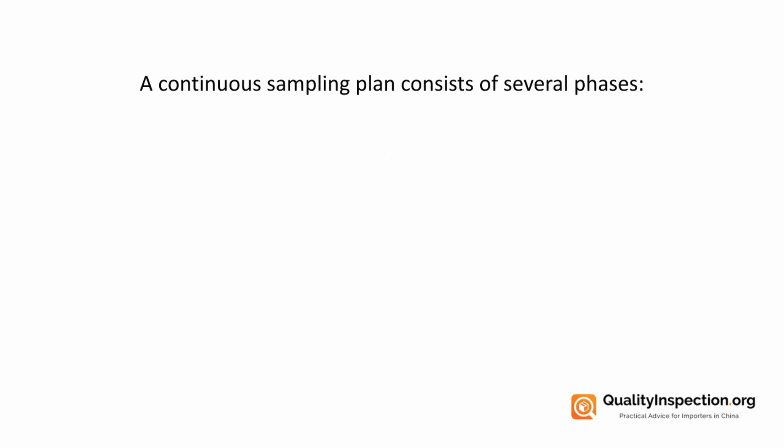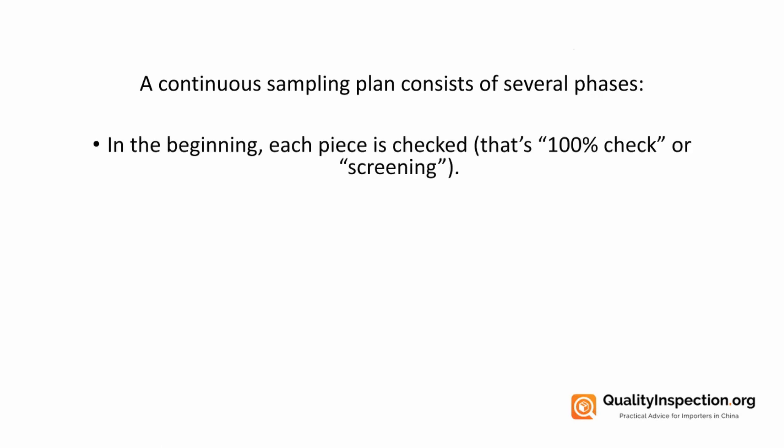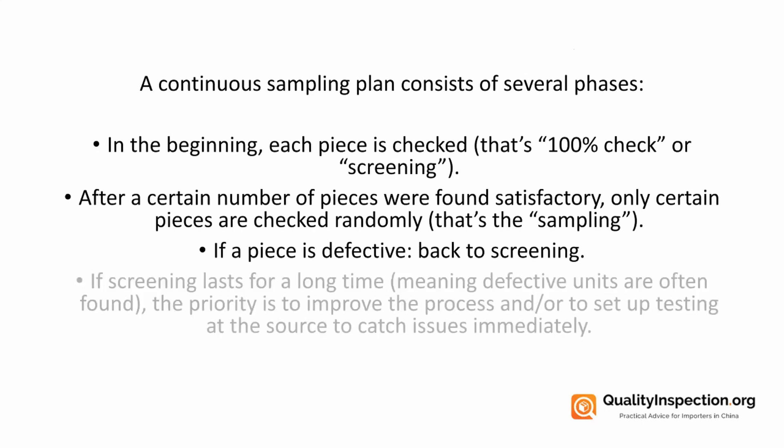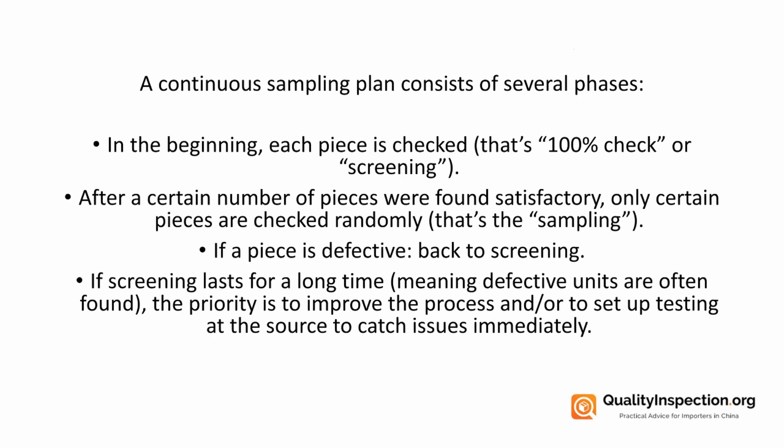A continuous sampling plan consists of several phases. In the beginning, each piece is checked — that's a 100% check. Then, after a certain number of pieces have been found satisfactory, only certain pieces are checked randomly — that's the sampling phase. If a piece is found to be defective, it goes back to screening. And if screening lasts for a long time, meaning defective units are often being found, the priority is to improve the process and/or set up testing at the source to catch issues immediately.